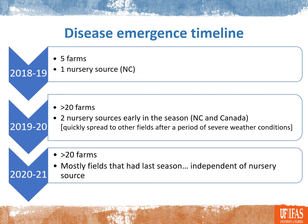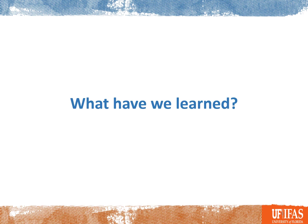Moving forward to this season, we basically had the same number of farms that are infected, but the main difference is that we can't really see that link with a nursery source anymore. What we see is that mostly fields that had the problem last season have it again, which unfortunately indicates that the fungus has established in our fields.